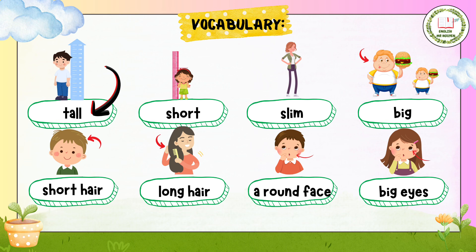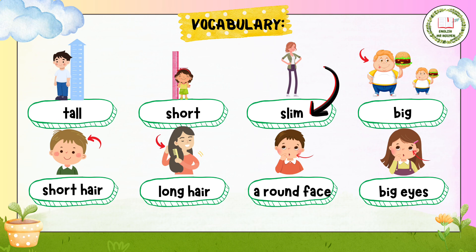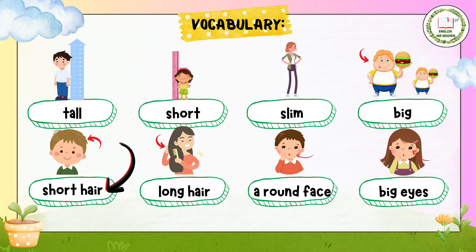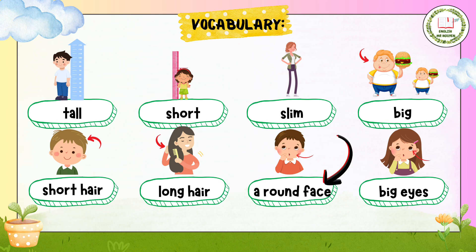Tall. Short. Slim. Big. Short hair. Long hair. A round face. Big eyes.